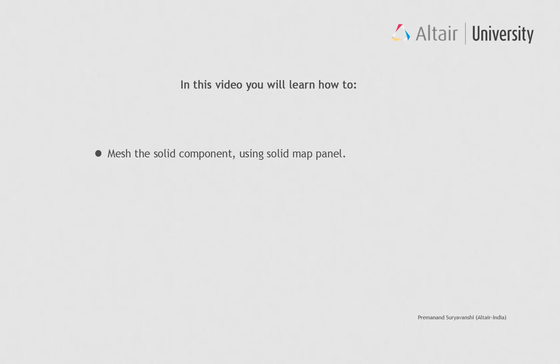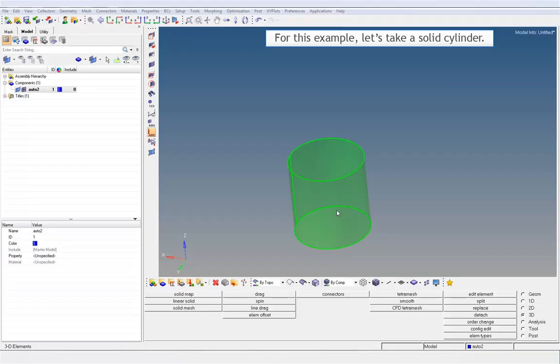In this video you will learn how to mesh the solid component using the solid map panel. For this example, let's take a solid cylinder.